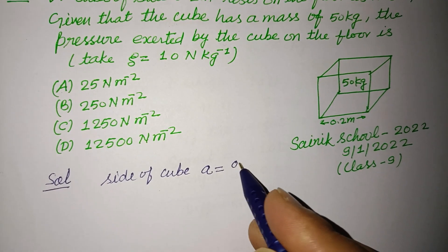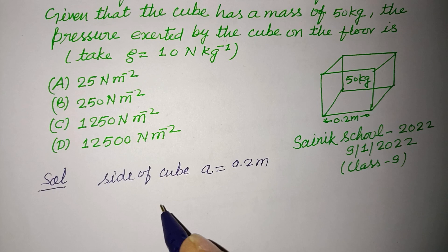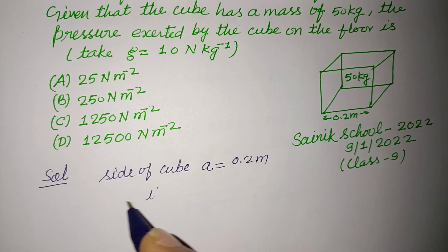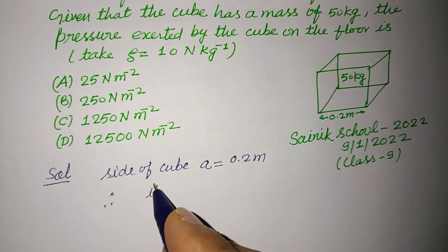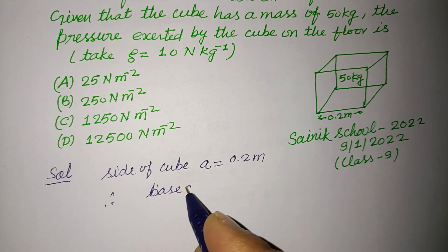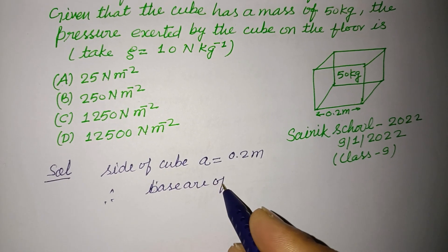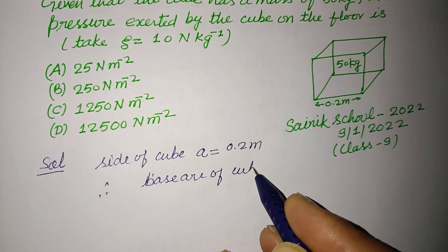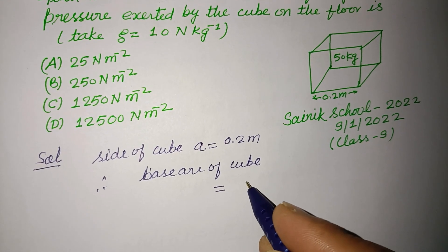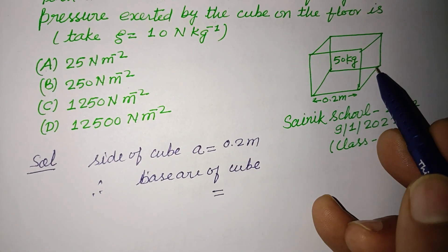Therefore, base area of the cube equals side squared, because this is a square base.